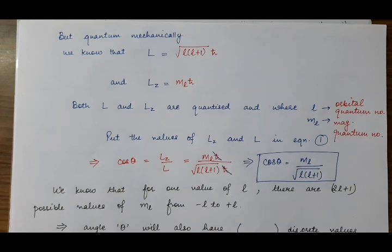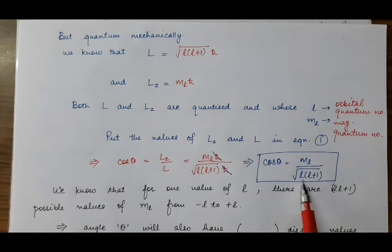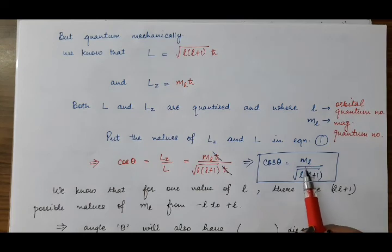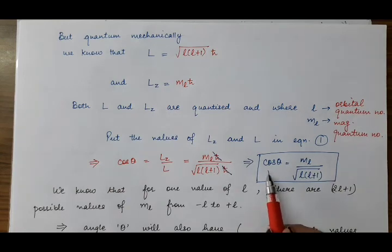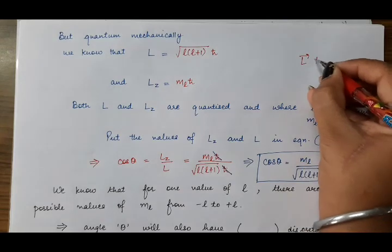Corresponding to a single value of l, there are 2l+1 values of ML, because the values of ML range from minus l to plus l including 0. That gives l positive values, l negative values, so 2l values plus one zero, totaling 2l+1 values of ML for a single value of l. If we have 2l+1 values of ML, then cos theta will also have 2l+1 values, and therefore theta will have 2l+1 discrete values.